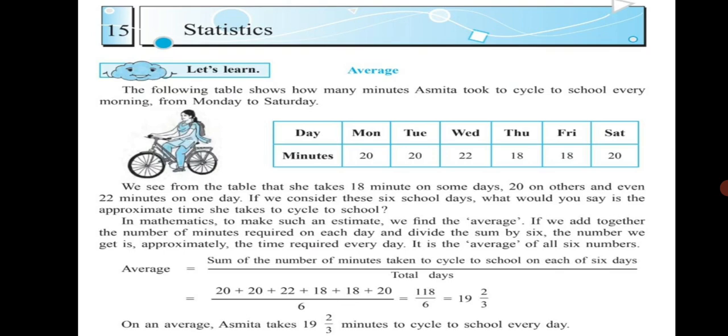So here we have on Monday 20 minutes, Tuesday 20 minutes, Wednesday 22, Thursday 18, Friday 18, and Saturday 20 minutes. Altogether there are 6 days. That's why we add them and divide by 6 to find the average.